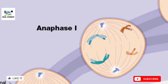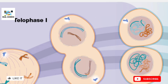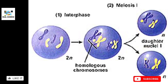The fourth phase of meiosis one is telophase one. In telophase one, karyokinesis is completed — nuclear division is done and both nuclei have 2n chromosomes (46 chromosomes each). The cytoplasm is still not separated; separation begins with the formation of a cleavage furrow at the center, which joins to separate the two cells through cytokinesis.